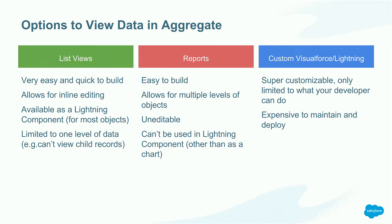My first instinct was to just build a Lightning component or Visualforce page with a SOQL query that spits out the data, and change the query whenever you want to change the filter. But the reports were so close — if I could just put a report in a Lightning component on a home page, I'd be done. But I couldn't. It seemed like it was 80% there, and I shouldn't use something as heavy-handed as building out a custom feature.